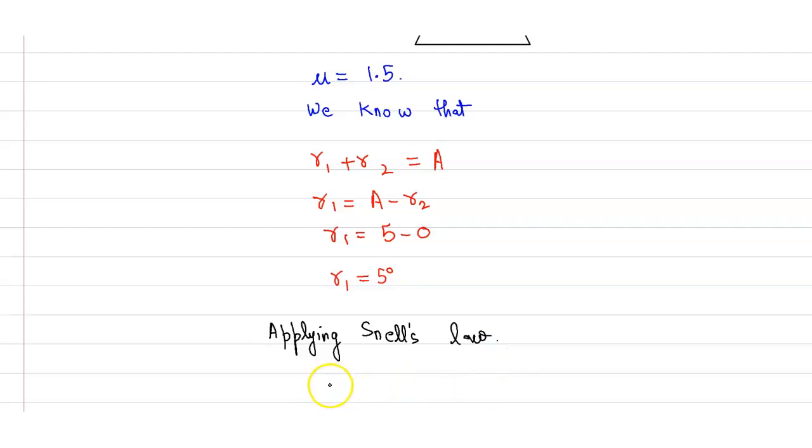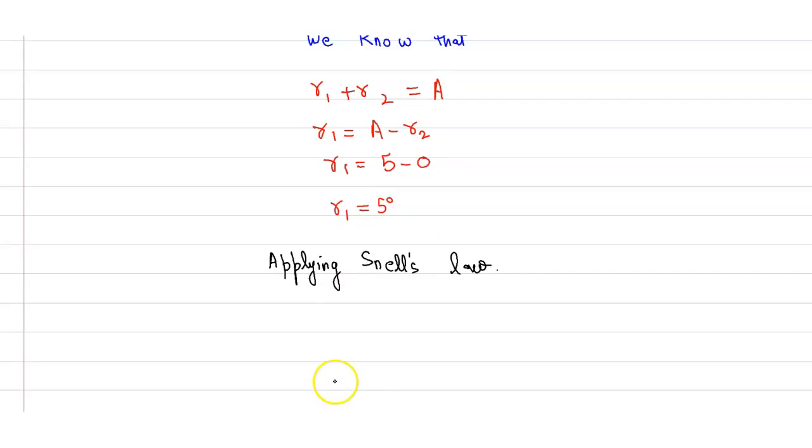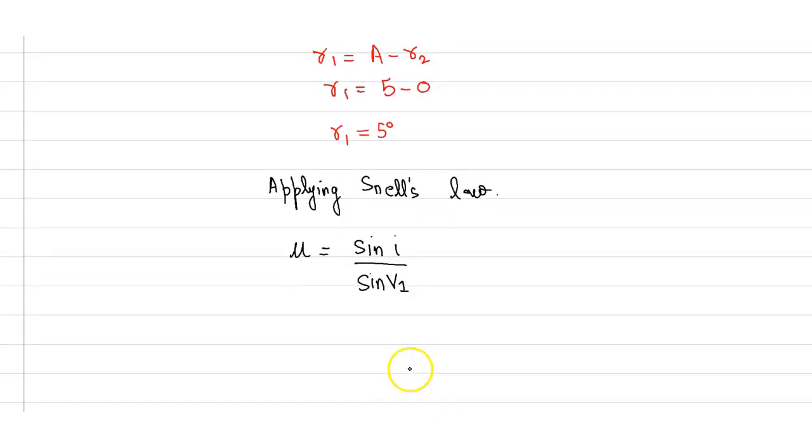From here, mu is equal to sine i divided by sine r1. So from here we can say that sine i is equal to mu times sine r1. So sine i will become